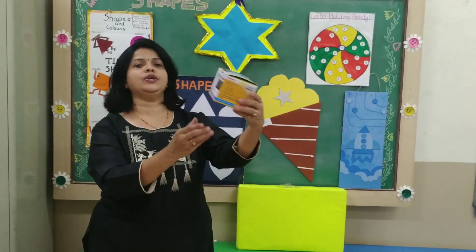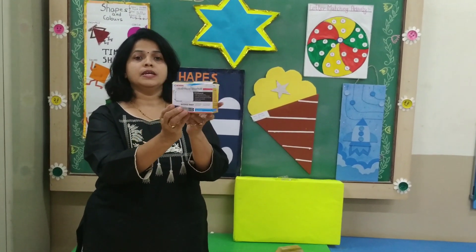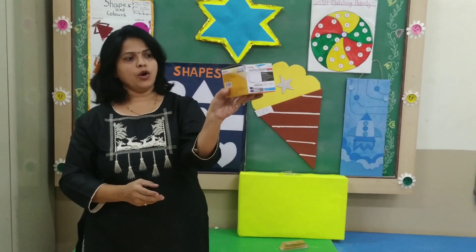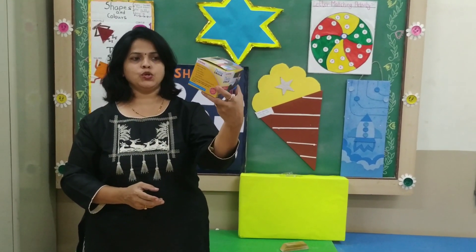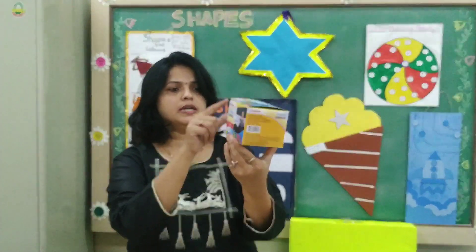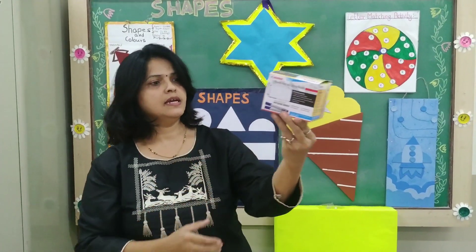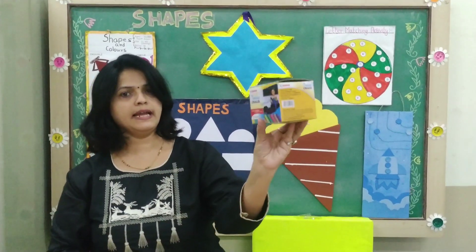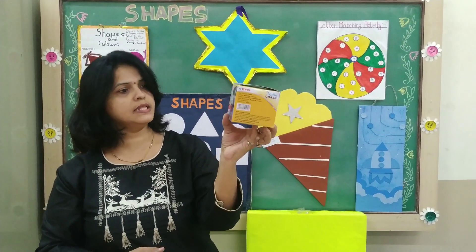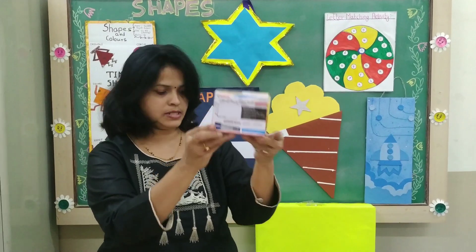This is a cube. This is a cube shape. If you have any such type of box, observe this cube. There are many corners and many sides. Observe it carefully. If you have a box at home, see the cube. This is a cube in shape.